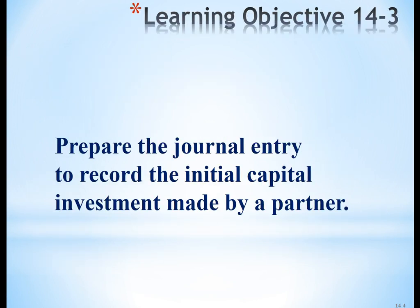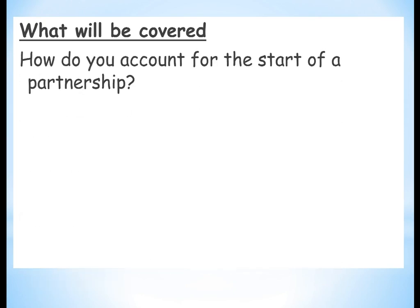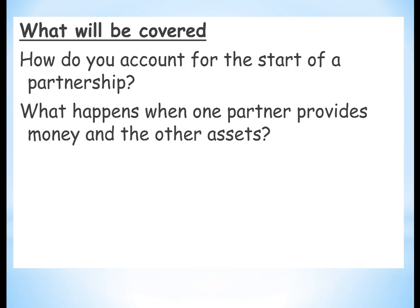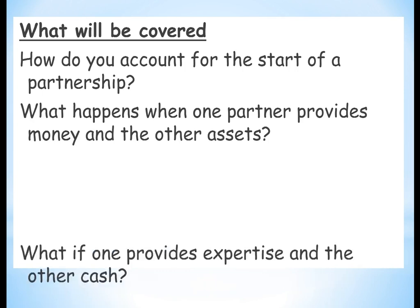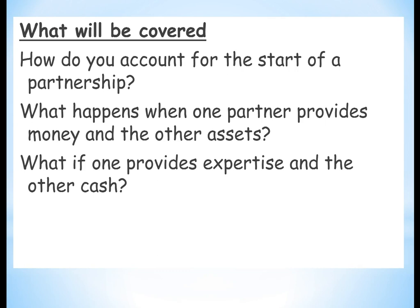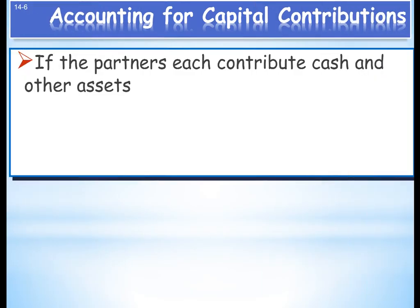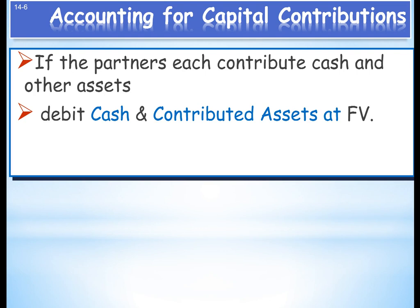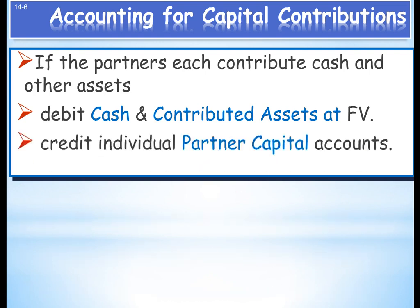Now let's look at preparing journal entries to record the initial capital investment by a partner. We will cover: how do you account for the start of the partnership, what happens when one partner provides money and the other assets, and what if one provides expertise and the other cash? If partners each contribute cash and other assets, you debit cash and contributed assets at fair value, and credit the individual partner capital accounts.